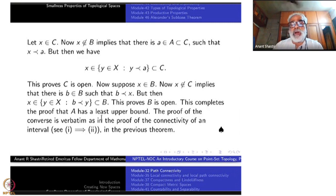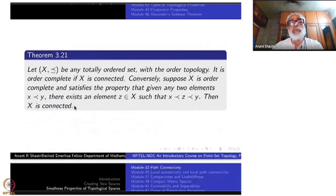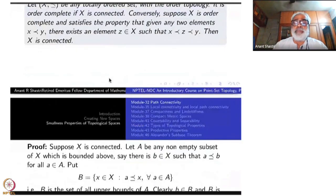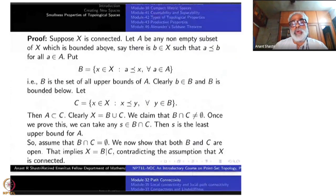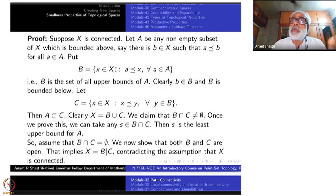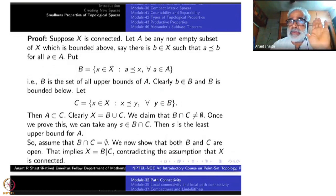The proof of the converse is verbatim as in the proof of connectivity of an interval — 1 implies 2. Instead of the usual less-than-or-equal-to, you replace it by the order relation. That's all. This is something I have taken you somewhat deeper into. Go through this carefully, because these things are purely logical. You can try to make a picture, but when you do, you may be misled — because then you may already be using properties of real numbers. So make a picture but throw it away and verify that everything comes from pure logic.